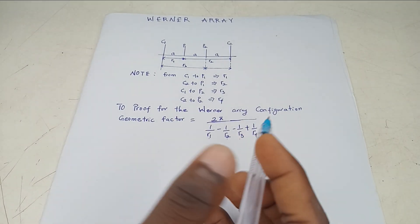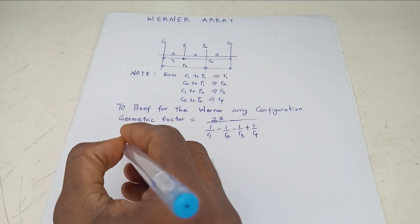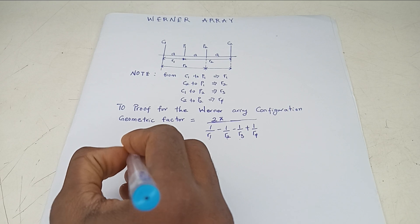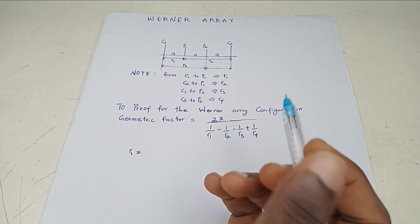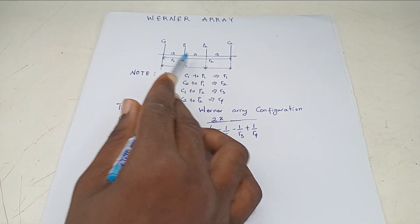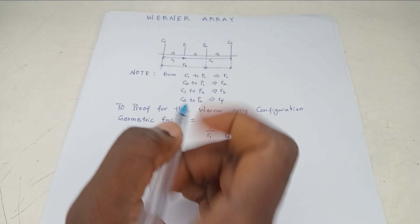So let's prove for our geometric factor. Now, from here, we can see that R1. So R1 here is C1 to P1. Can you not see that it's A? Right? A.